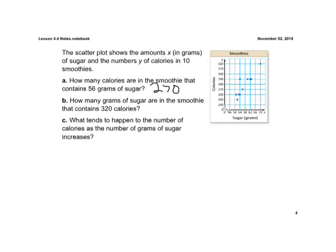We see there are 270 calories with 56 grams of sugar. Part B says, how many grams of sugar are in the smoothie that contains 320 calories? So now we're given a y-value of 320. We go up here on the y-axis, trace it over, we see this little dot here. Trace it down to x, we see that there are 70 grams of sugar in a smoothie with 320 calories.